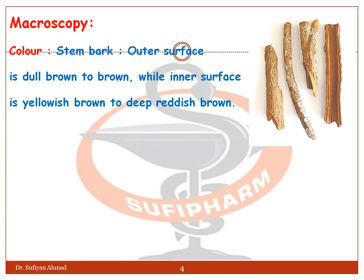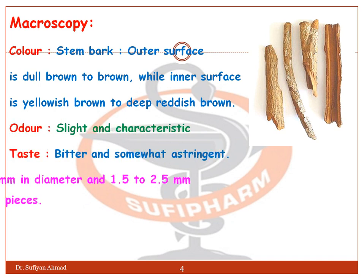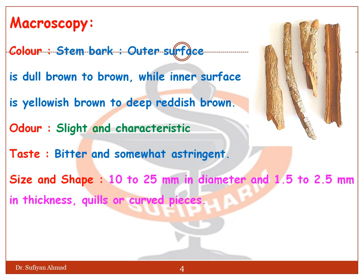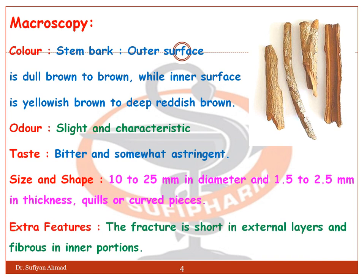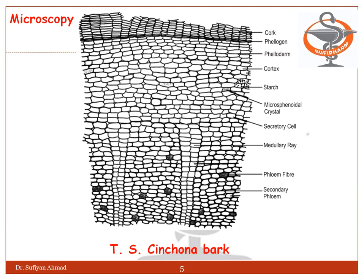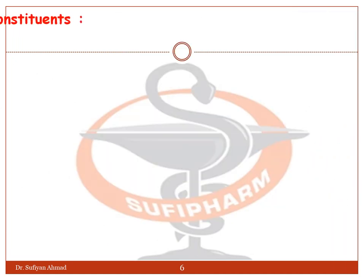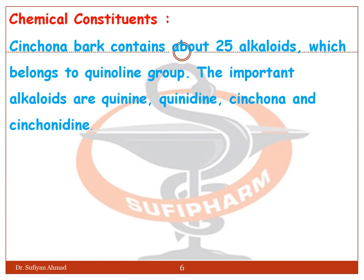Microscopy: the color of the stem bark — the outer surface is dull brown to brown, while the inner surface is yellowish brown to deep reddish brown. Odor: slight characteristic. Taste: bitter and somewhat astringent. Size and shape: 10 to 25 mm in diameter and 1.5 to 2 mm in thickness, in quill and curved pieces. The fracture is short in the external layer and fibrous in the inner portion.